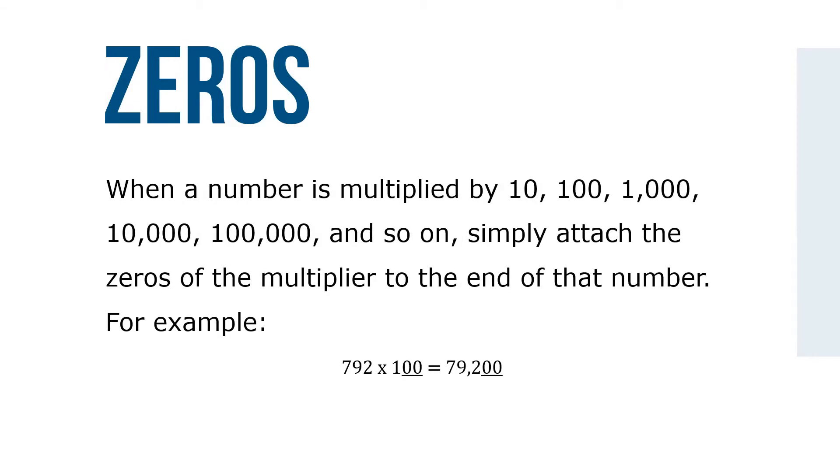When a number is multiplied by 10, 100, 1000, 10,000, 100,000, and so on, simply attach the zeros from the multiplier to the end of that number. For example, 792 times 100, two zeros, is 79,200.